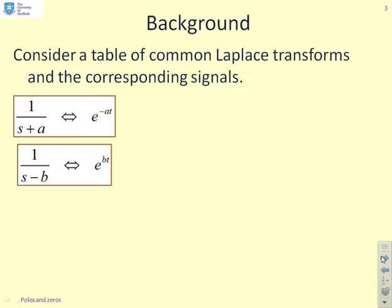First, a bit of background. If we look at some common Laplace transforms and the corresponding signals, you see a clear pattern. 1 over s plus a gives you a decaying exponential, e to the minus at. It converges. 1 over s minus b gives you an exponential which diverges to infinity.